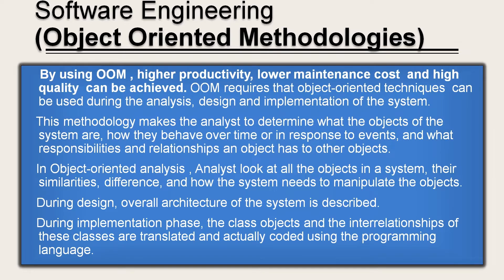By using object-oriented methodology, higher productivity, lower maintenance cost, and high quality can be achieved. Object-oriented methodology requires that object-oriented techniques be used during the analysis, design, and implementation of the system. This methodology makes the analyst determine what the objects of the system are, how they behave over time in response to events, and what responsibilities and relationships an object has to other objects. In object-oriented analysis, analysts look at all the objects in the system, their similarities, differences, and how the system needs to manipulate objects. During design, the overall architecture of the system is described. During implementation, the class objects and interrelationships of these classes are translated and coded using a programming language.